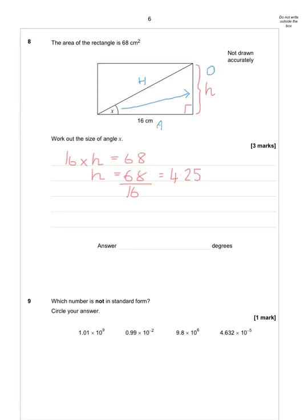Now if I write down SOHCAHTOA, I've got to pick which of the formulae to use. I want the formula that has O in, because I've just worked that out. I've worked out that the opposite is 4.25. And I want the formula that has A in, because I know that the adjacent side is 16. So the formula that has O and A in is the tan formula.